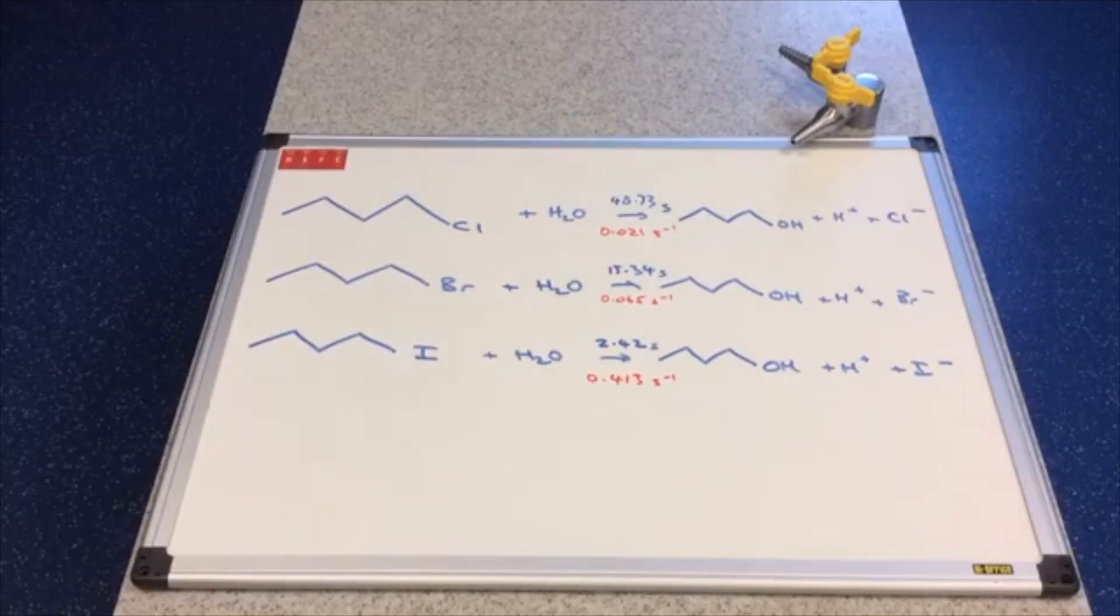There's all three reactions on the board with the times in blue and the one over time - the rate - expressed to three decimal places in red. You can see a nice pattern: the chlorobutane is hydrolyzed the slowest with the lowest rate, whereas the iodobutane has the fastest rate. We're going to explain why that's the case now using the mechanism.